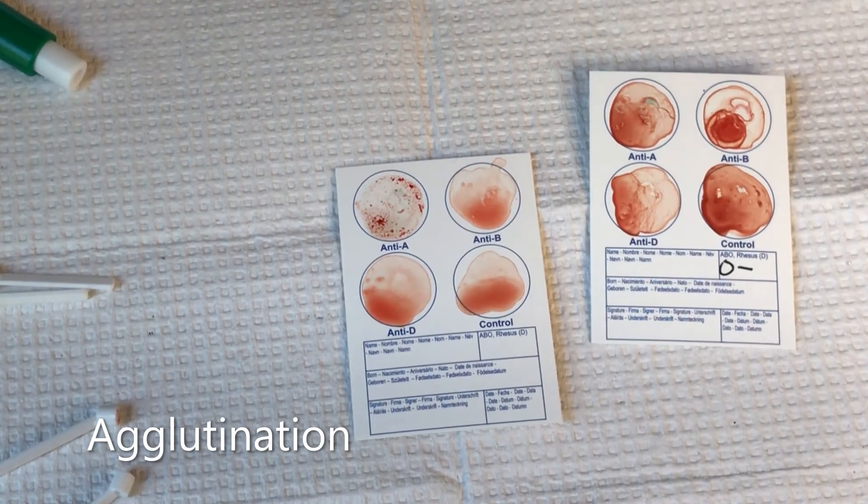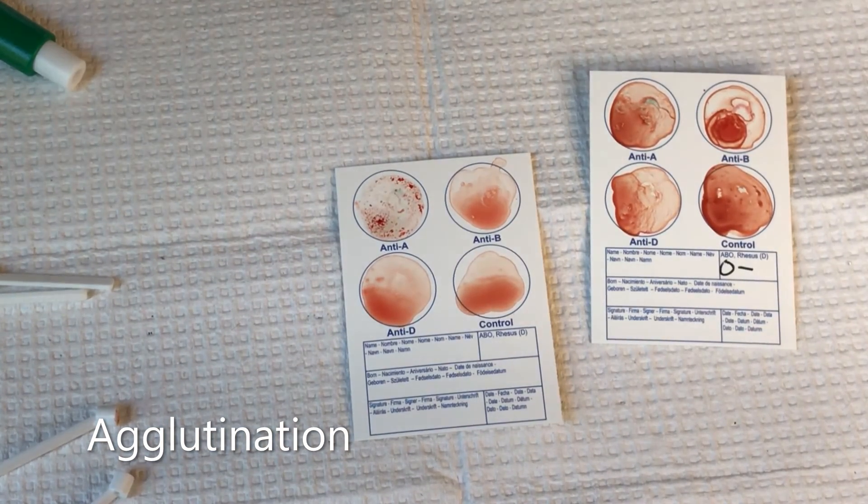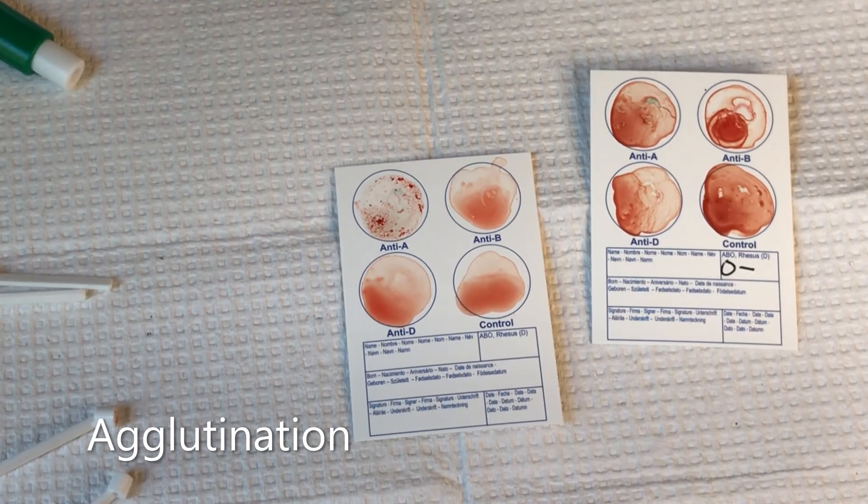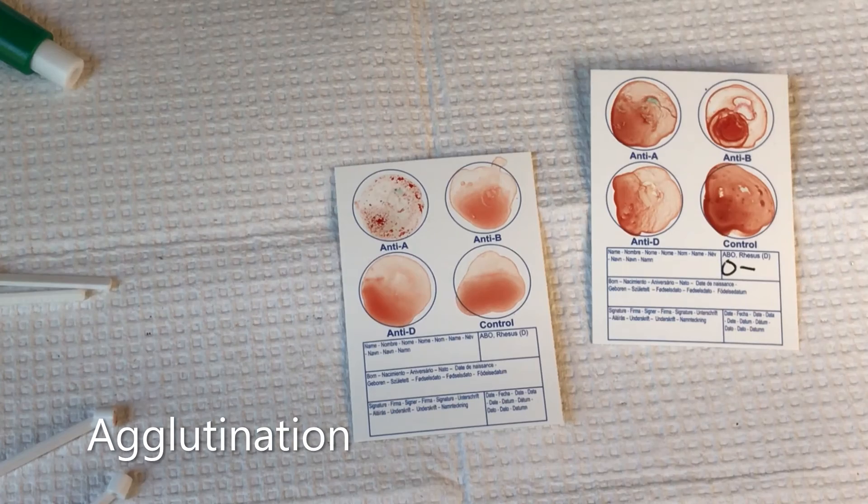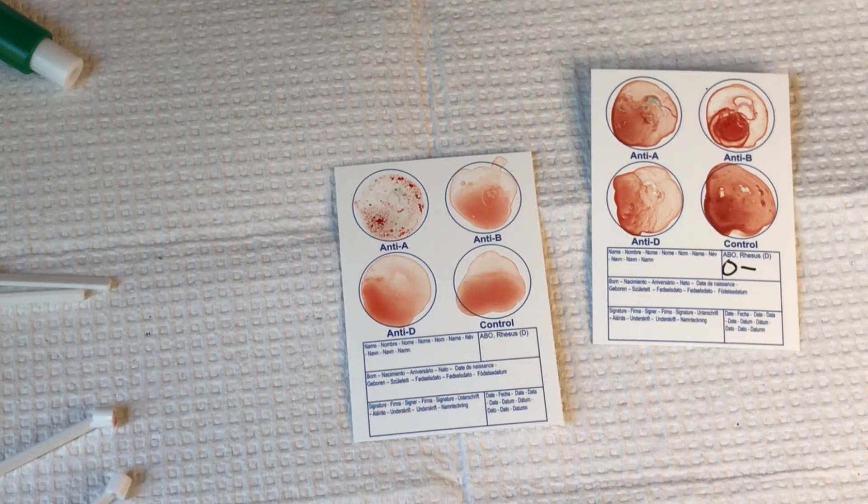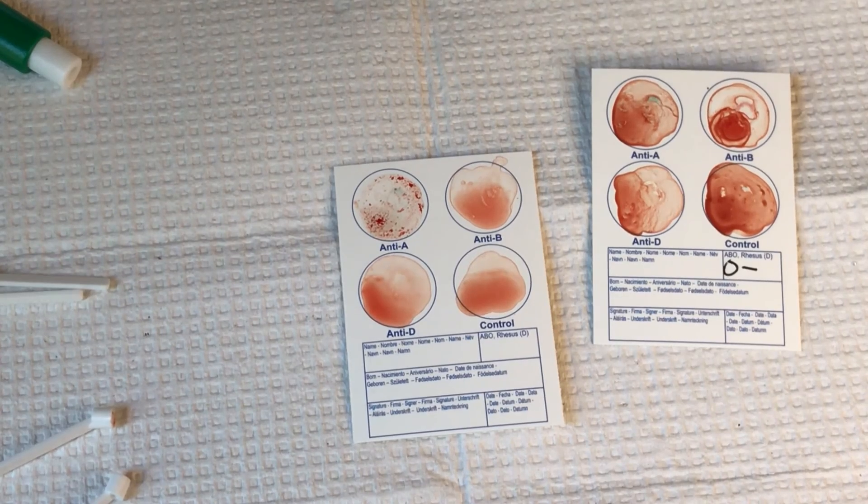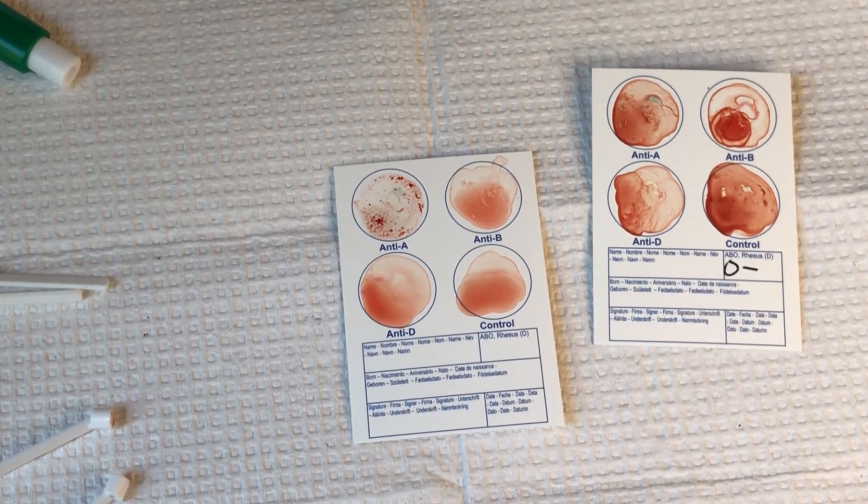Agglutination occurs when an antibody targets an antigen, in this case the A antigen found on my wife's blood, and causes the cells that have it to clump. So it clumps it up. And ultimately, when we discuss the immune system, you'll see that that makes it easier for your body to target and remove potential pathogens.